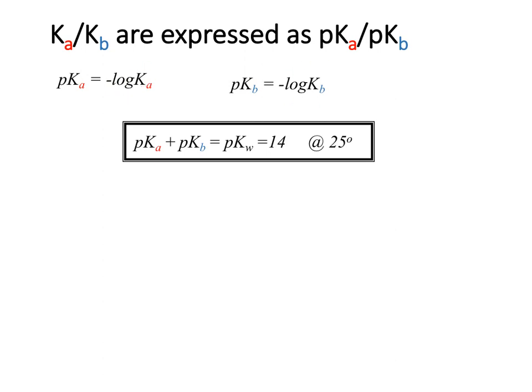We get pKa and pKb by taking the negative logs of Ka and Kb respectively. For Ka and Kb, the higher the value, the stronger your acid or base is going to be. It's the opposite for pKa and pKb. The lower your pKa or pKb, the stronger your acid or base is going to be respectively.